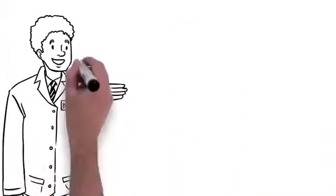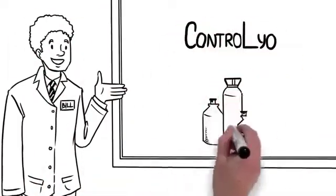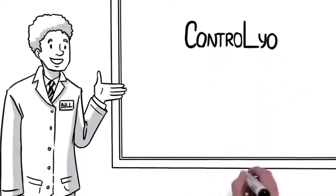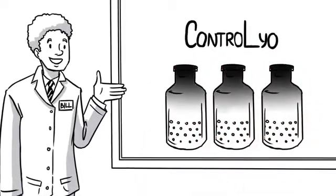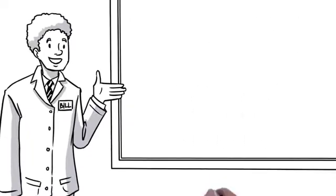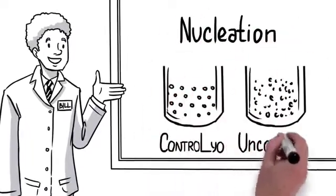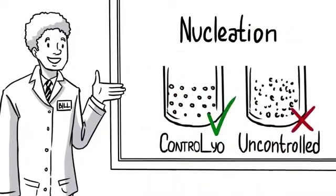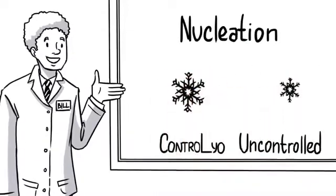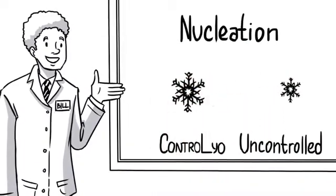Control-Lyo technology uses an inert gas to pressurize the freeze drying chamber. This results in complete freezing of all vials at the same time and reduced supercooling. Vials actually freeze at a higher temperature and yield larger, more consistent crystal sizes. These larger crystals allow faster sublimation due to less product resistance.